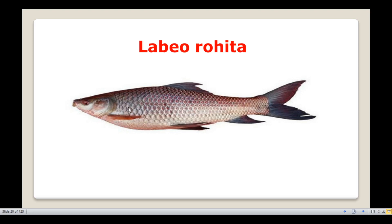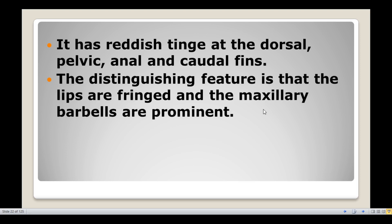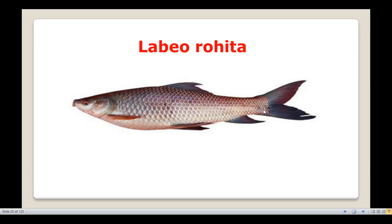In the juvenile stage, it possesses dark bands in the caudal peduncle region. It has a reddish tinge at the dorsal, pelvic, anal, and caudal fins. So this fin region has a reddish tinge.